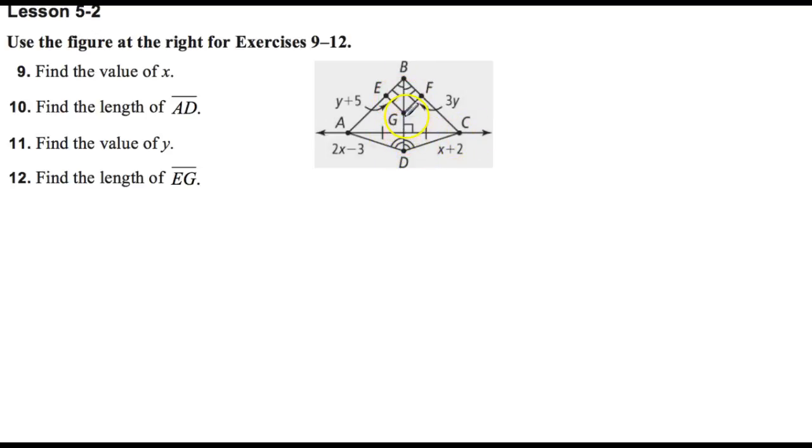Or you could say BD is bisecting AC. And then I've got a right angle right here. That tells me that ADC must be a right triangle, triangle ADC. So that tells me 2x is congruent to x plus 2. So 2x minus 3 is equal to x plus 2. Add 3 to both sides, you get 2x equals x plus 5. Subtract x and you get x is equal to 5 there.